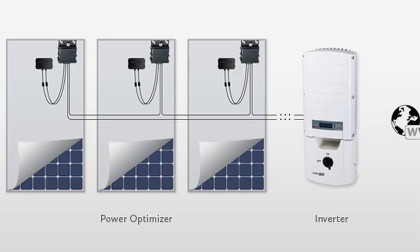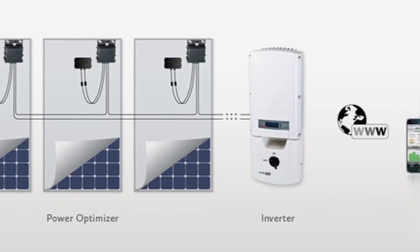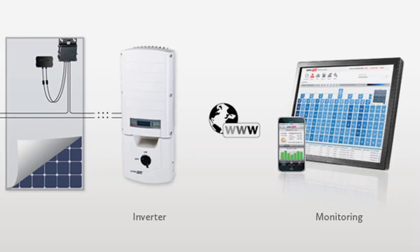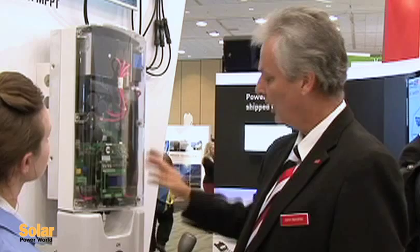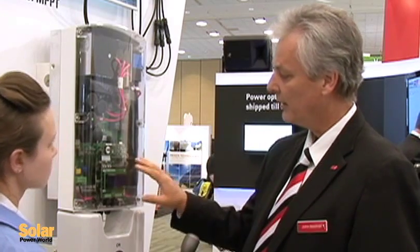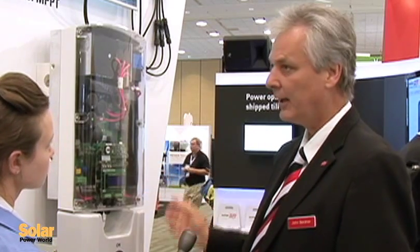It also includes integrated monitoring capabilities with internet connection. So we can collect the power and the data from each individual module, transmit it over the DC power line cable into the inverter, and then the inverter in turn sends it to the internet. You can monitor your system on any browser and see exactly what the entire system is doing and what each module is doing.